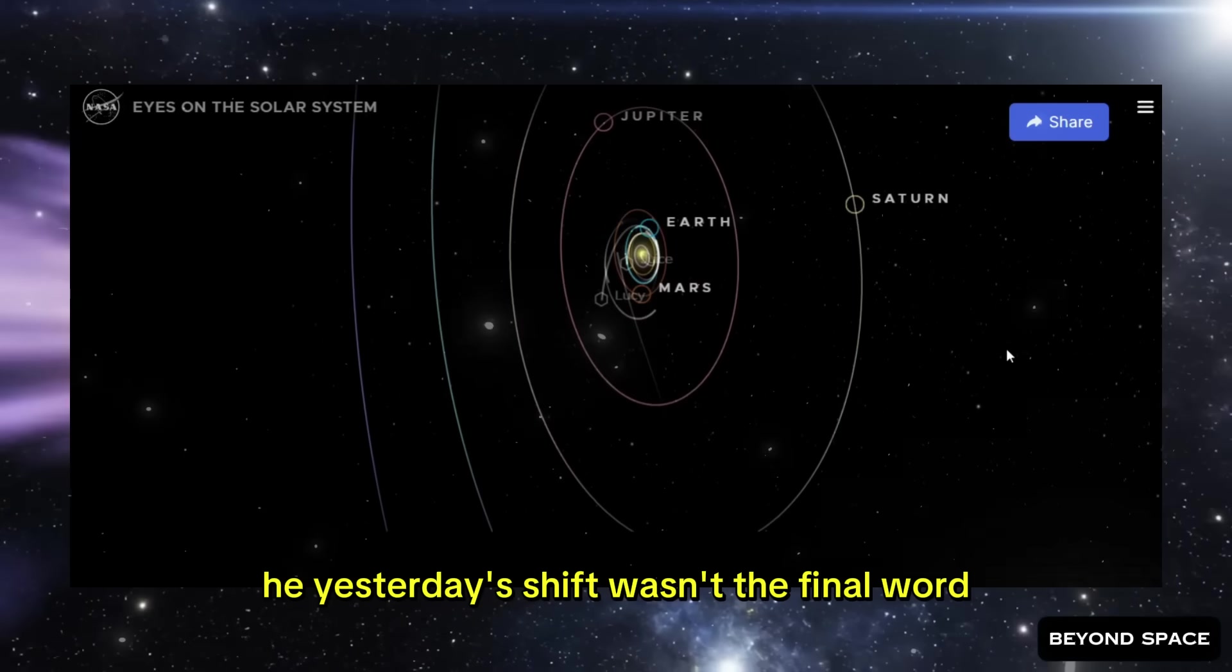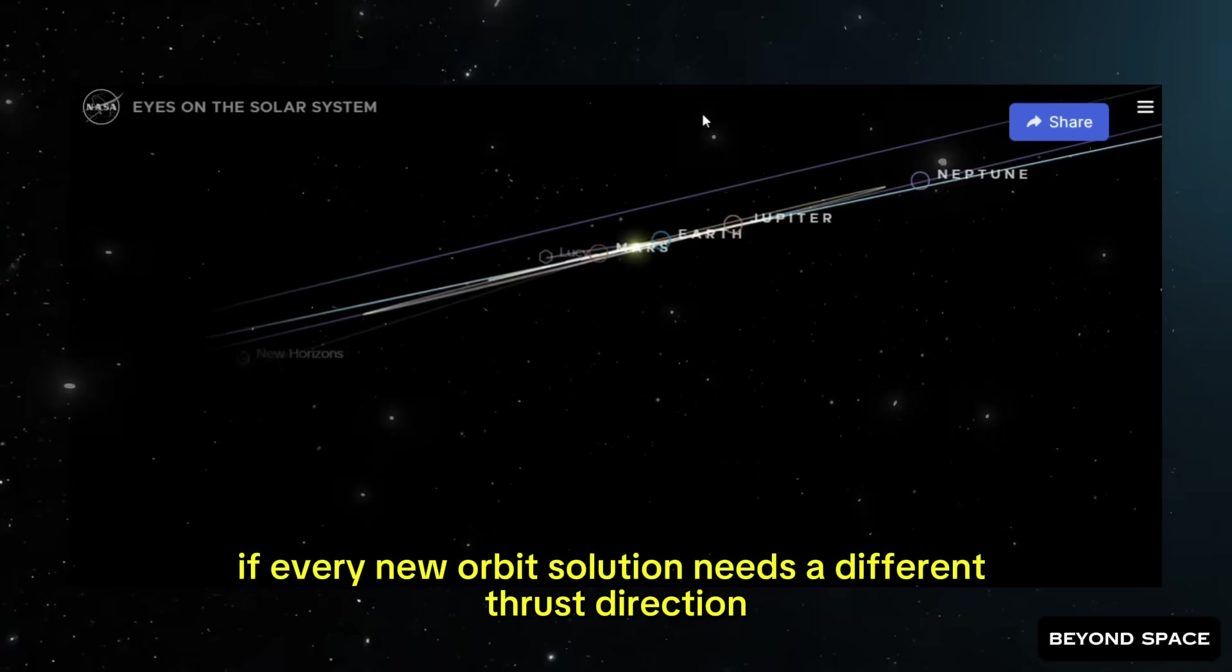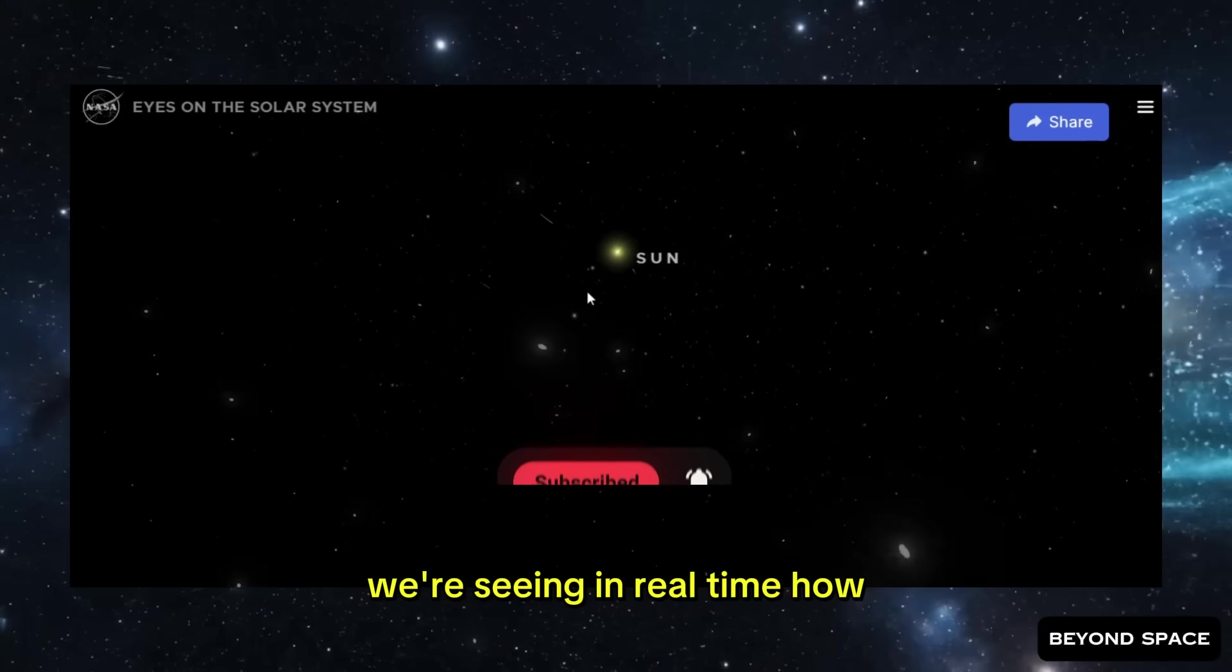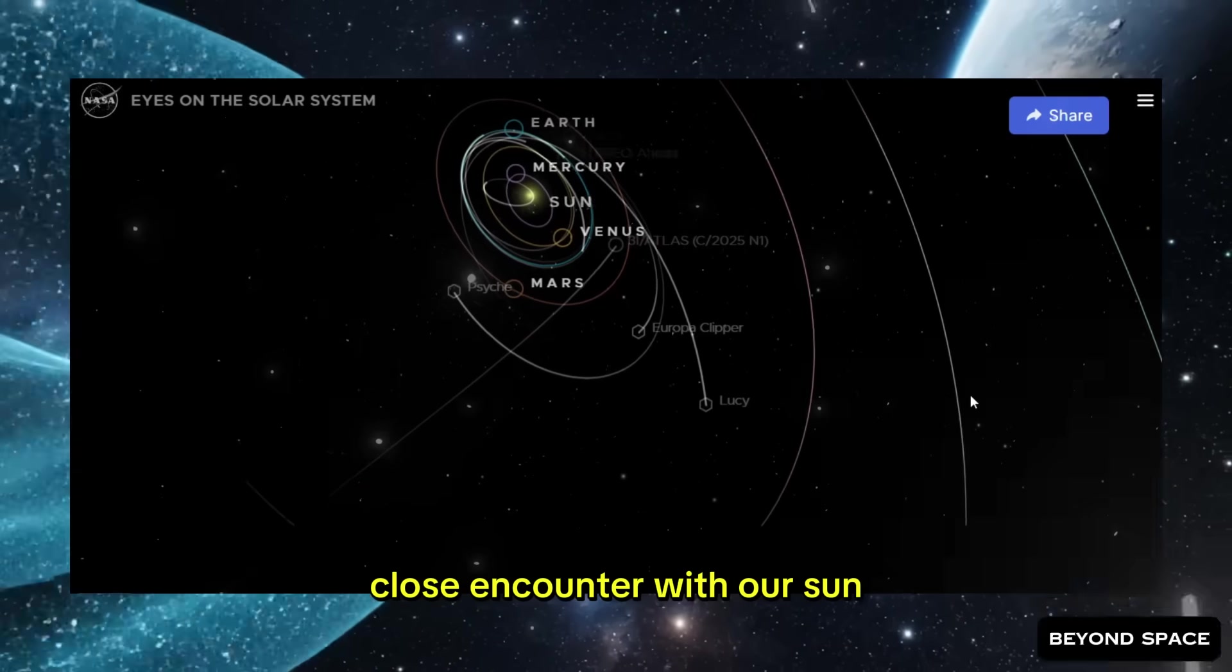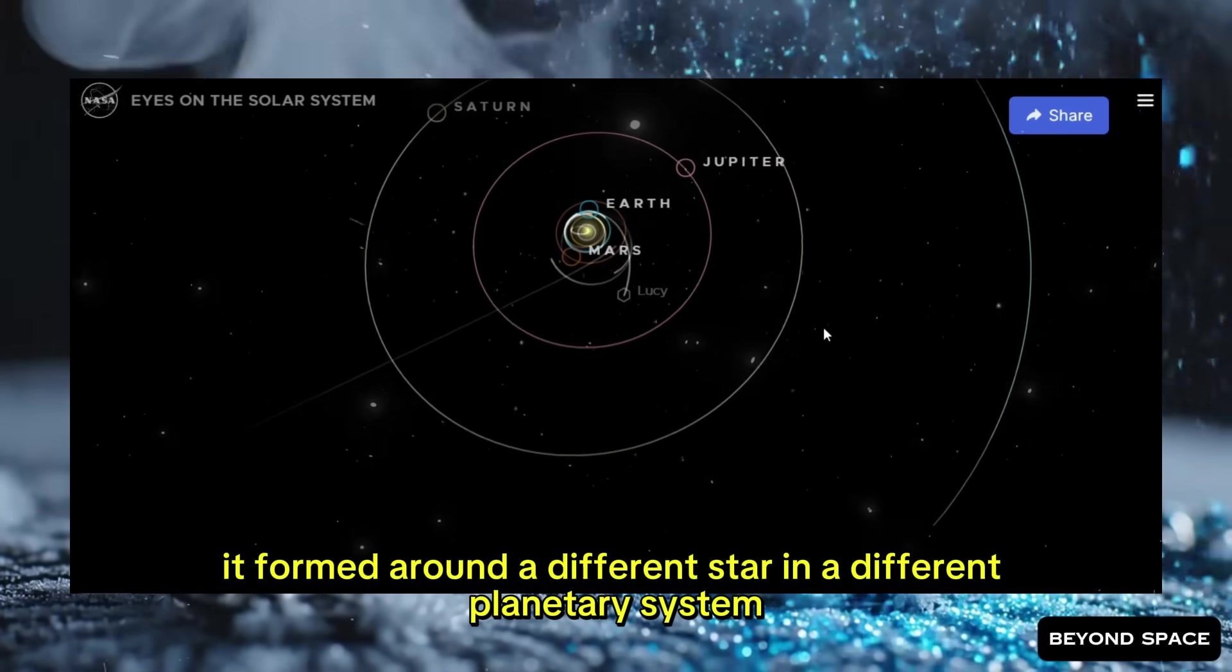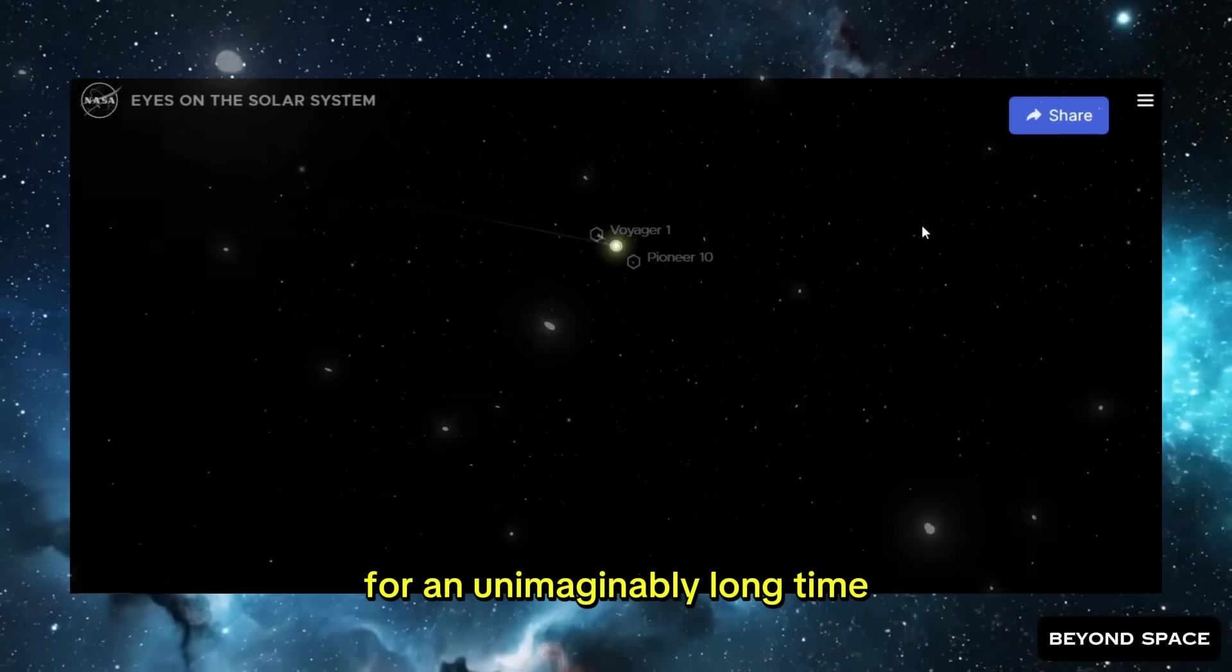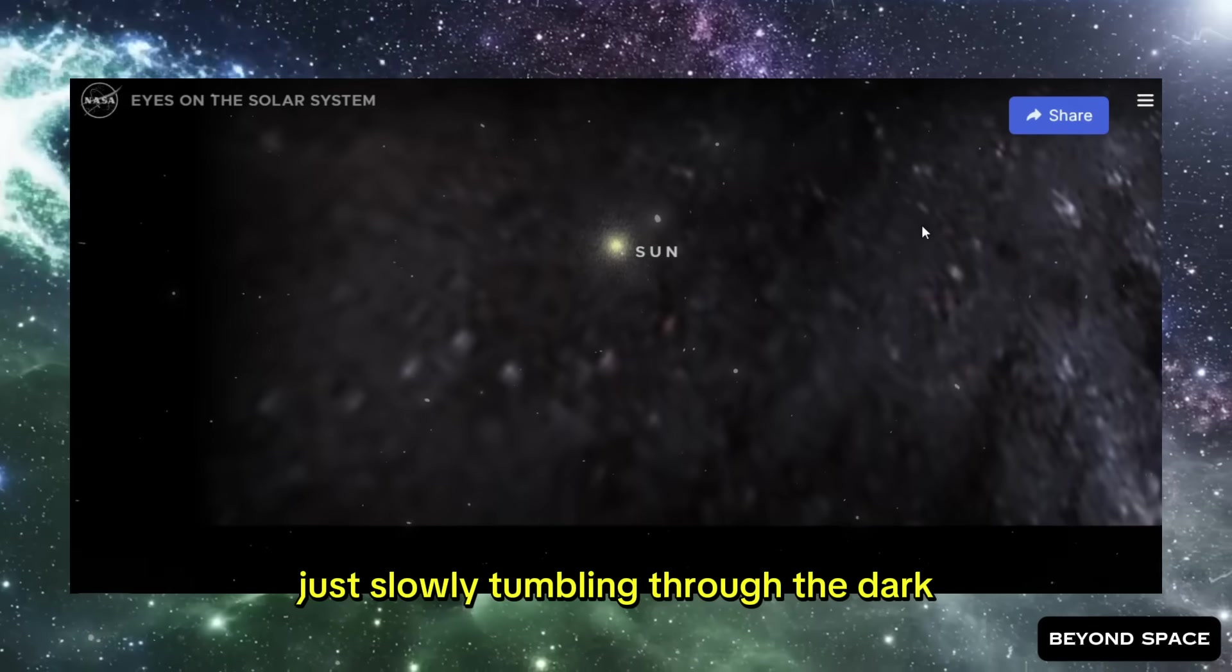And if that pattern continues, if every new orbit solution needs a different thrust direction, if every new set of images shows the jets leaning a little bit further, then what we're watching here is essentially a live experiment. We're seeing in real time how an interstellar comet responds to its one and only close encounter with our sun. This thing came from somewhere else. It formed around a different star in a different planetary system. Maybe billions of years ago. It's been drifting through the cold emptiness of interstellar space for an unimaginably long time. Frozen solid. Completely dormant. Just slowly tumbling through the dark.